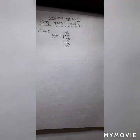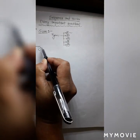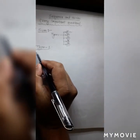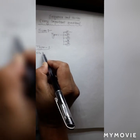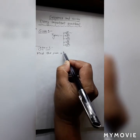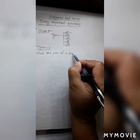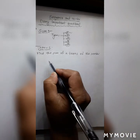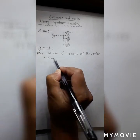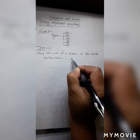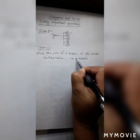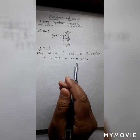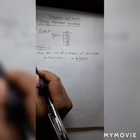Let's start with Type 1. Here in Type 1, let's write one question: find the sum of n terms of the series. The series given here is 4 + 44 + 444 + ... and we have to find the sum of this series to n terms. So students, this is the first type of question.